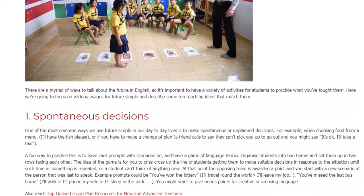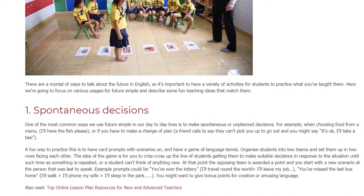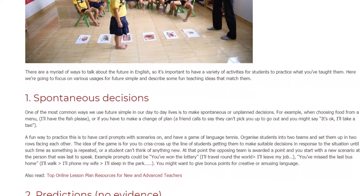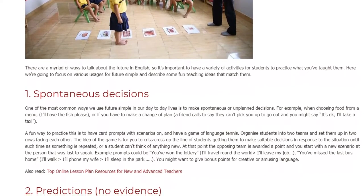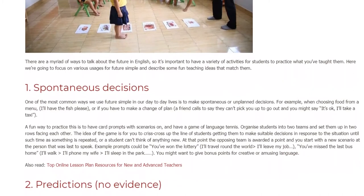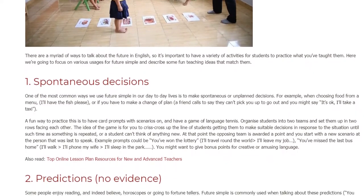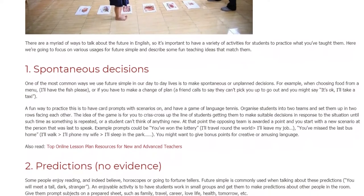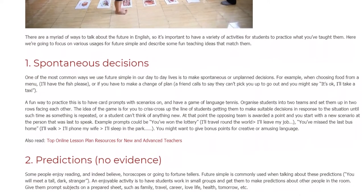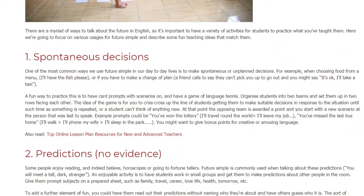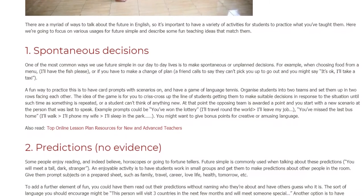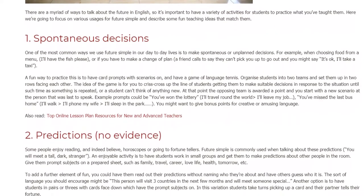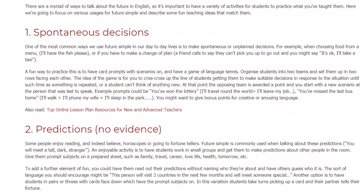Organize students into two teams set up in two rows facing each other. The idea is to crisscross up the line of students, getting them to make suitable decisions in response to a situation until something is repeated or a student can't think of anything new. At that point the opposing team is awarded a point and you start with a new scenario. Example prompts could be: 'You've won the lottery' — 'I'll travel round the world, I'll leave my job'; 'You've missed the last bus home' — 'I'll walk, I'll phone my wife, I'll sleep in the park.' You might want to give bonus points for creative or amusing language.